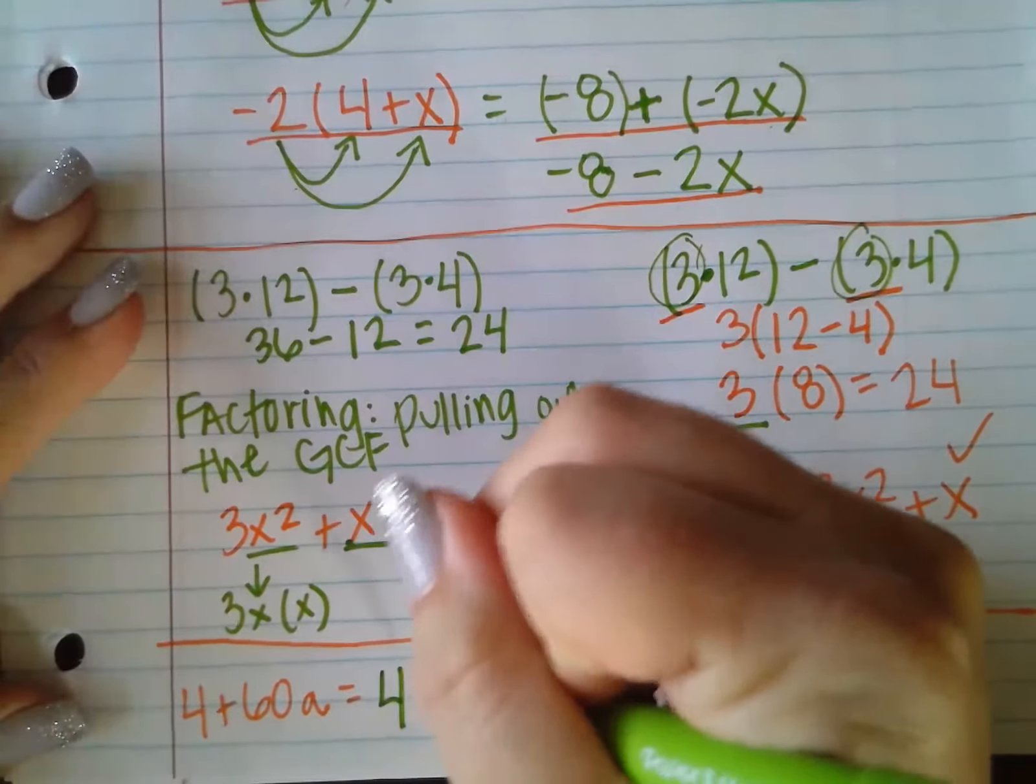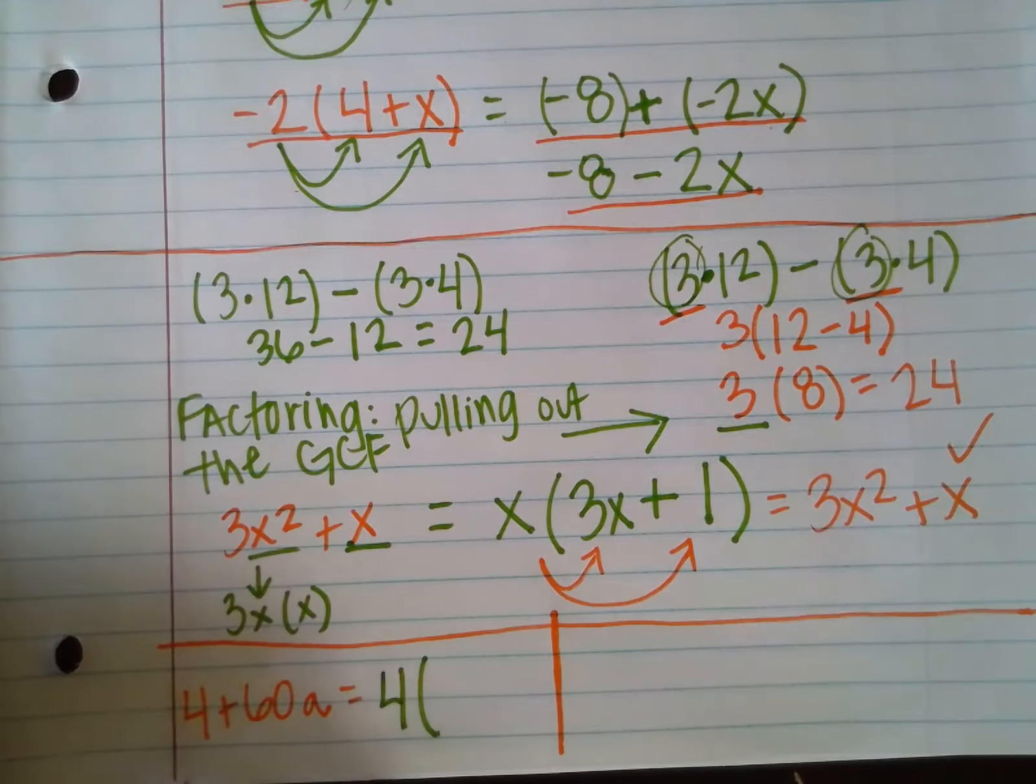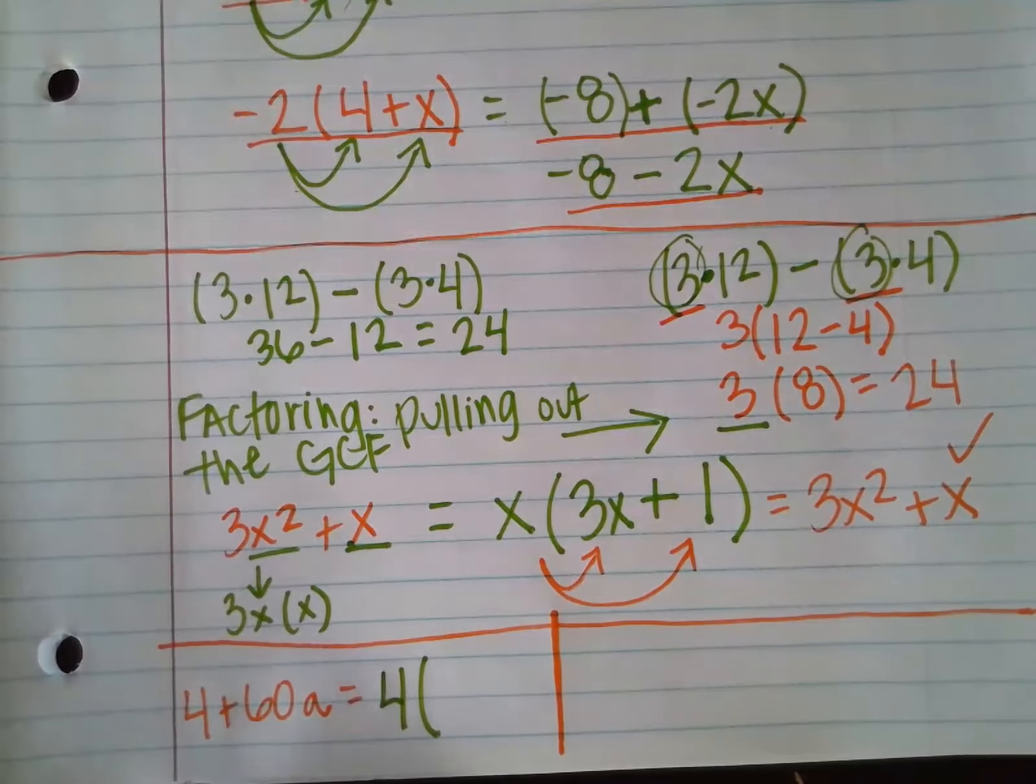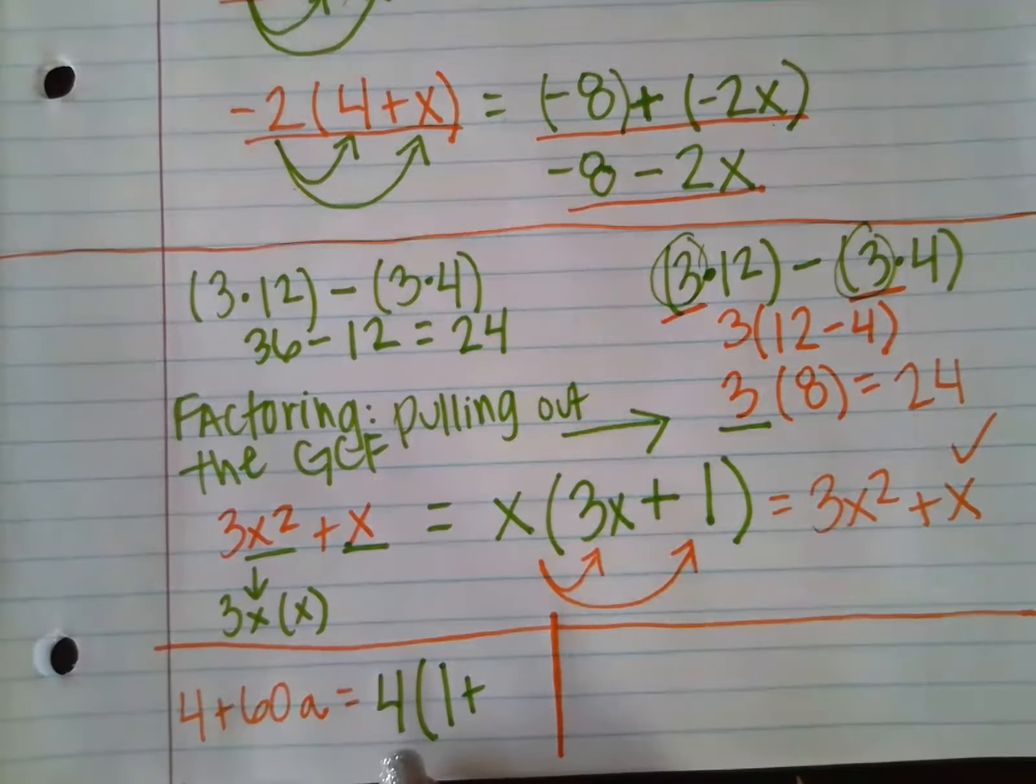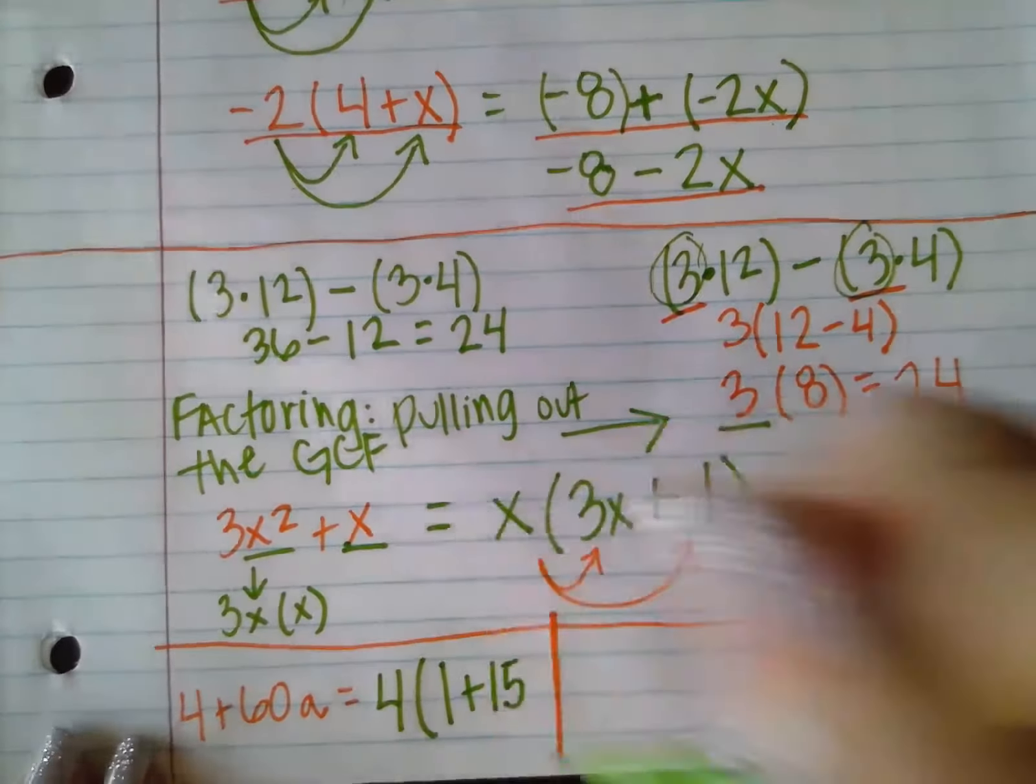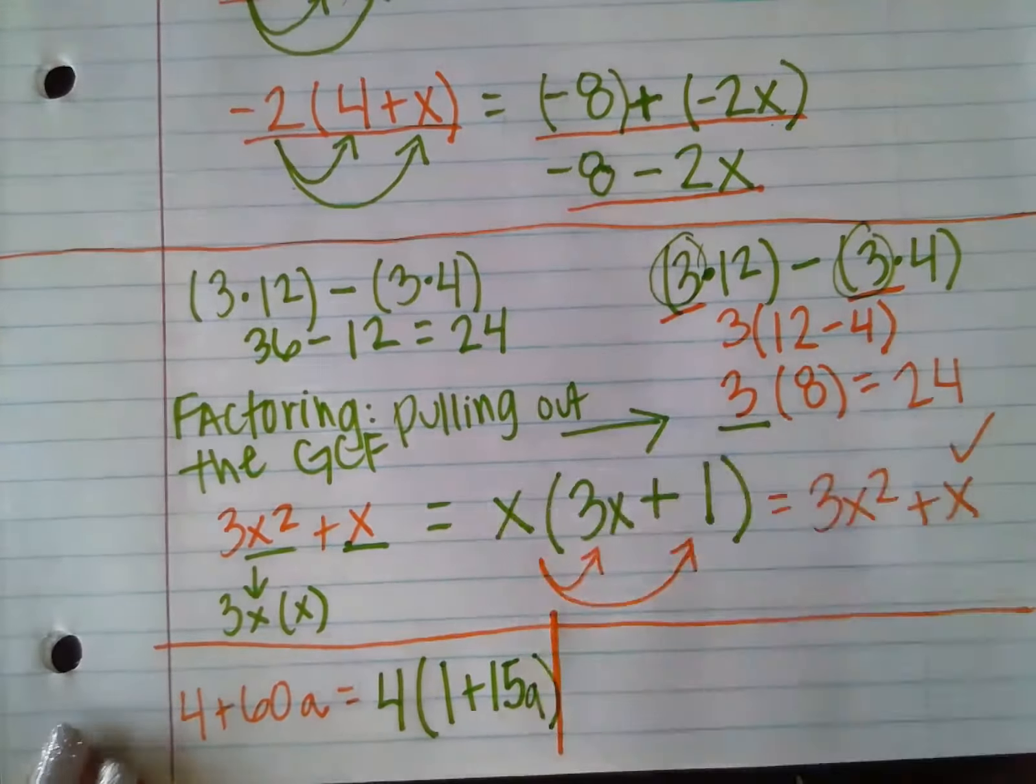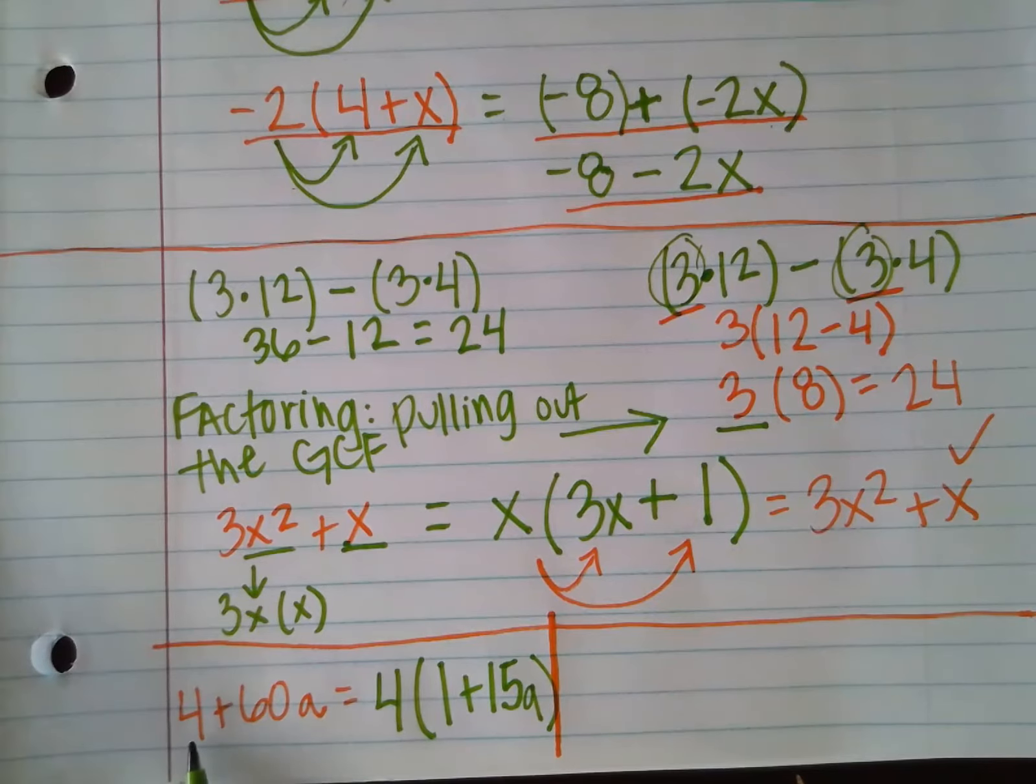So if I factor out a 4, what's left over in the group is what I have to multiply by 4 to get my original expression. So what times 4 makes 4? That's just 1. What times 4 makes 60? That's 15. But I have to make sure I attach the A with it. And again, I can go back and check my answers by distributing. 4 times 1 is 4. 4 times 15A is 60A.